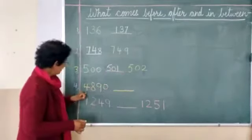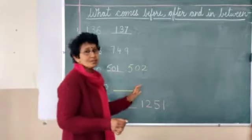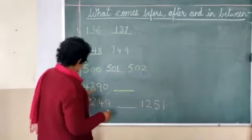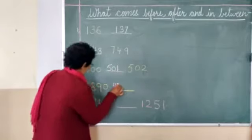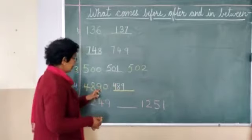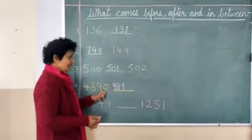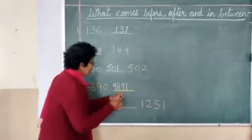Next one is 4890. After this number, which number will come? So again I am telling you: the first number is same, second number is same, third number is same. Now the last number is going to change. After 4890, 4891. Only the last number is changing.